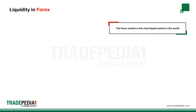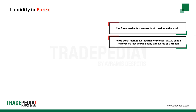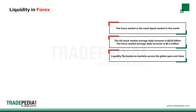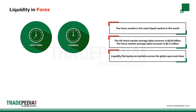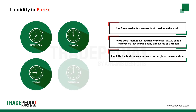The Forex market is the most liquid market in the world. The U.S. stock market average daily turnover is $220 billion, while the Forex market average daily turnover is $5.3 trillion. Liquidity fluctuates as markets across the globe open and close, with the period from 1300 to 1600 GMT being the most liquid, when London and New York are both active.